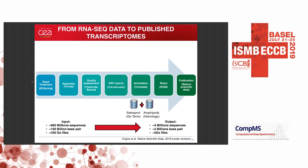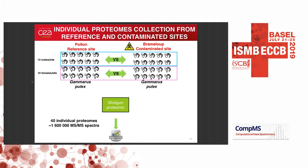Once we had our transcriptome, we moved to a biological study, focusing on two sites with only one species, Gammarus pulex. We analyzed 10 males and 10 females per site, producing 40 individual proteomes representing almost 1,050,000 spectra.